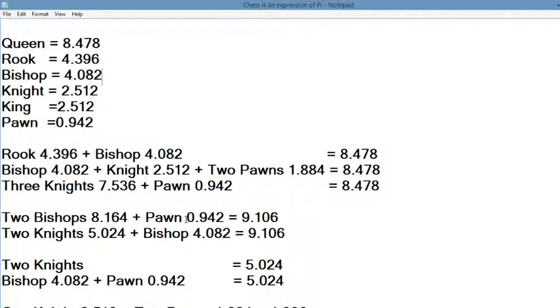Two bishops and a pawn, 9.106, so that's a little bit more than a queen. Two knights and a bishop, look at that, 9.106. So two bishops and a pawn are worth two knights and a bishop. Two knights equal 5.024. A bishop and a pawn equal 5.024. See you can't make these numbers up. And you can't refute them. This is how it pans out. People that want to tell you that two knights equal to two bishops, it's just not right. It's just a mistake, they're just incorrect.